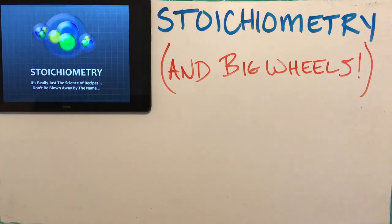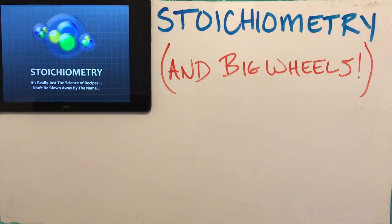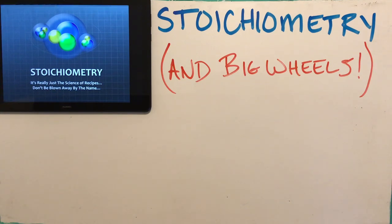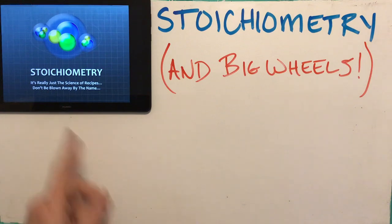All right, Grade 11 chemistry. Today's topic is stoichiometry. And we're gonna learn what a big wheel is today as well as some chem stuff. But what stoichiometry really is, if you simplify it, it's a study of recipes. So don't be blown away by the name.